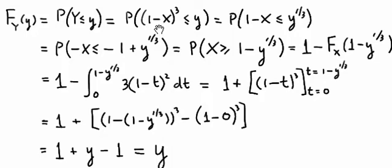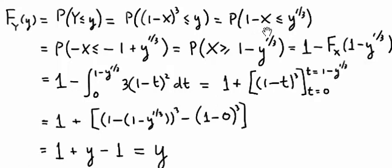And then because we have a decreasing function over the interval from X equals 0 to 1, we can just take the cubed root of both sides of this inequality. So we get the probability that 1 minus X all cubed is less than or equal to y is equivalent to the probability that 1 minus X is less than or equal to y to the 1 third power.